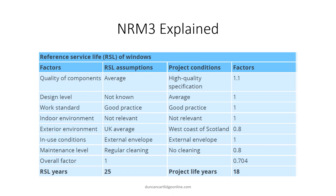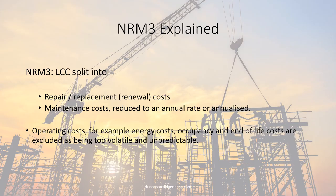In this example taken from NRM3, the service life of windows is reduced from 25 years — the perfect scenario — to 18 years due to location and lack of cleaning. How robust these factors are is open to speculation, although there are a number of sources where these indices can be found, including the BCIS.